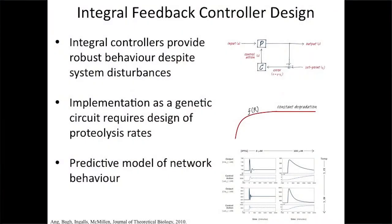The other project looks at a more generic design in terms of regulators. Working with David McMillan at the University of Toronto, we're constructing an integral feedback controller. Integral feedback is a central aspect of automatic feedback control, providing robust behavior in the face of disturbances across many different contexts. We explored the possibility of building such a controller in a genetic context, and our model analysis identified a key aspect: control of a particular rate of proteolysis. We explored different ways that could be implemented and used the model to make predictions, with ongoing lab work refining this toward actual implementation.